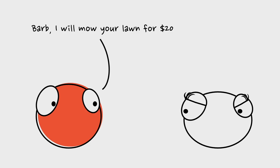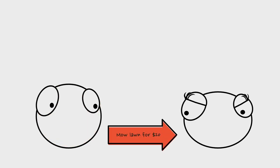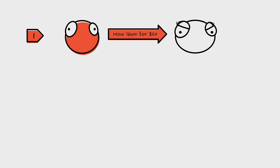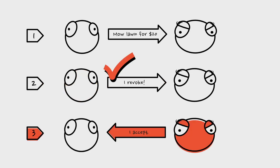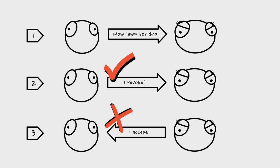If we've got Bob and Barb, and Bob says, 'Barb, I will mow your lawn for $20,' then we have an offer from Bob to Barb. If Bob says 'I revoke' before Barb has accepted, that's a successful revocation — the acceptance would be invalid because the offer has been terminated, terminating Barb's power to accept.